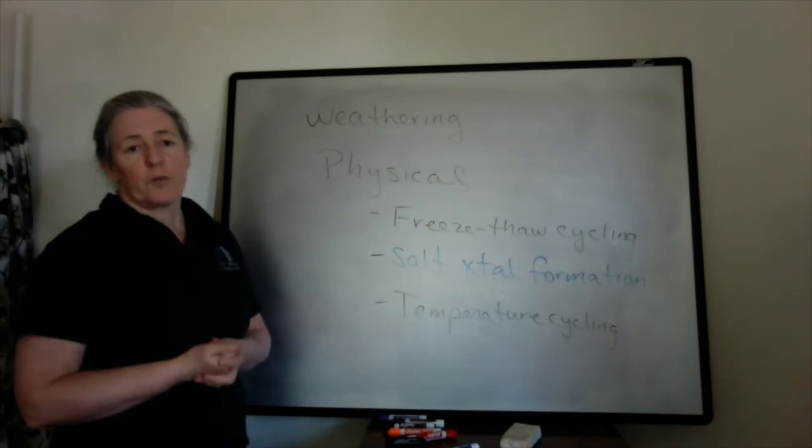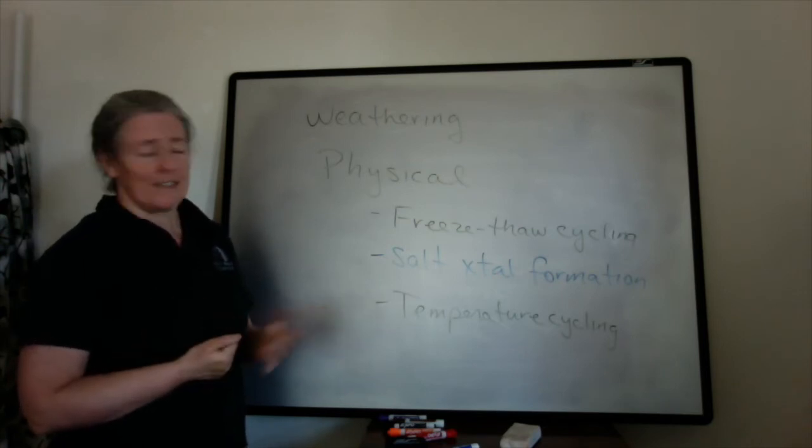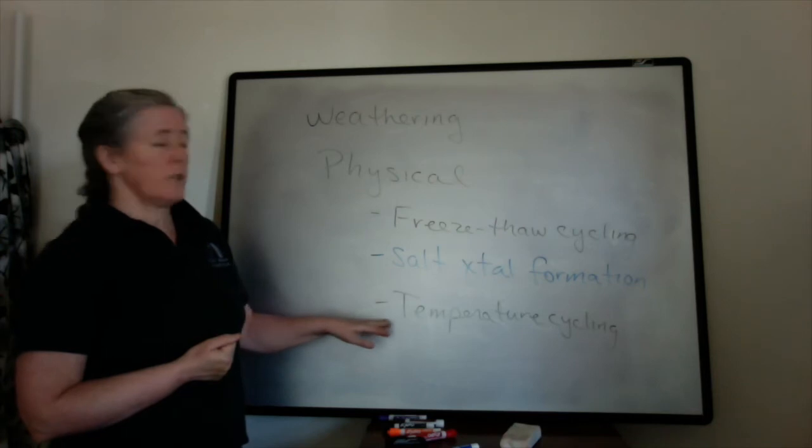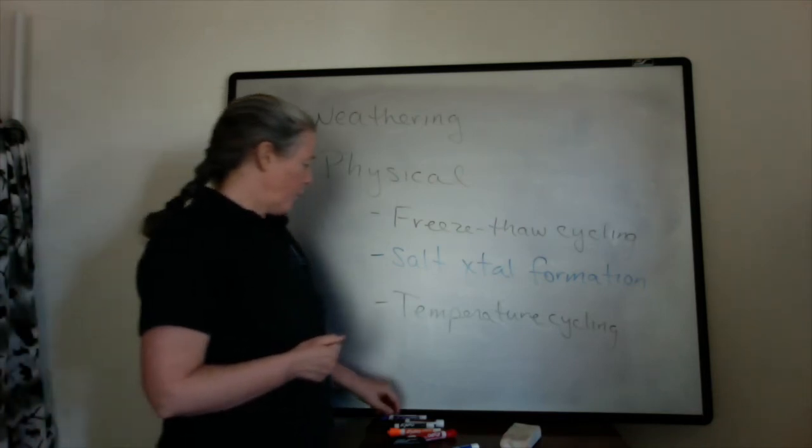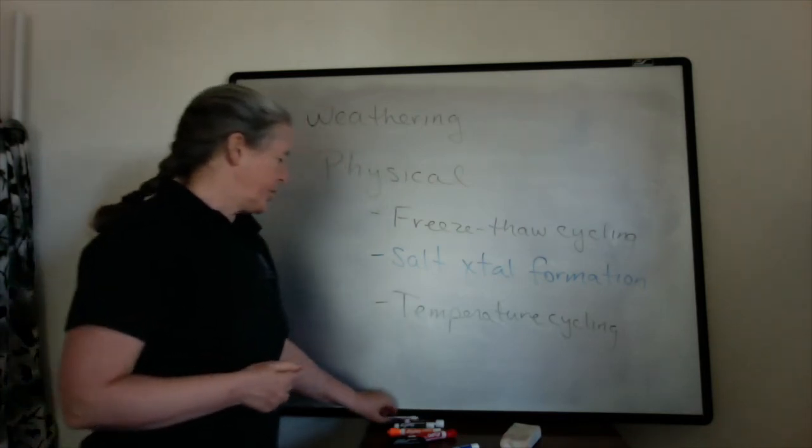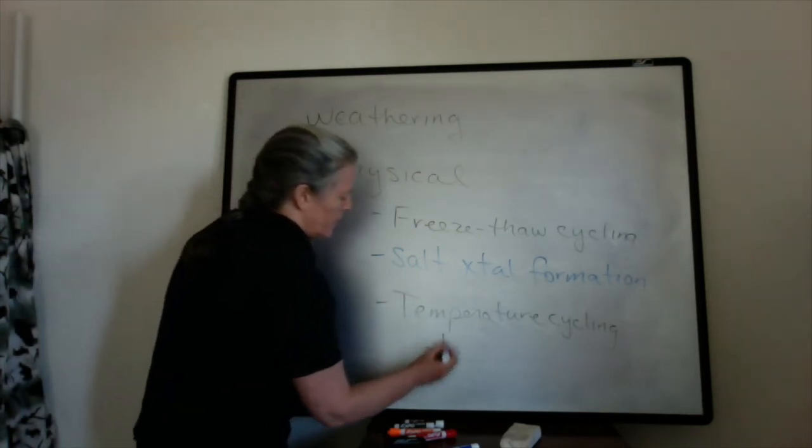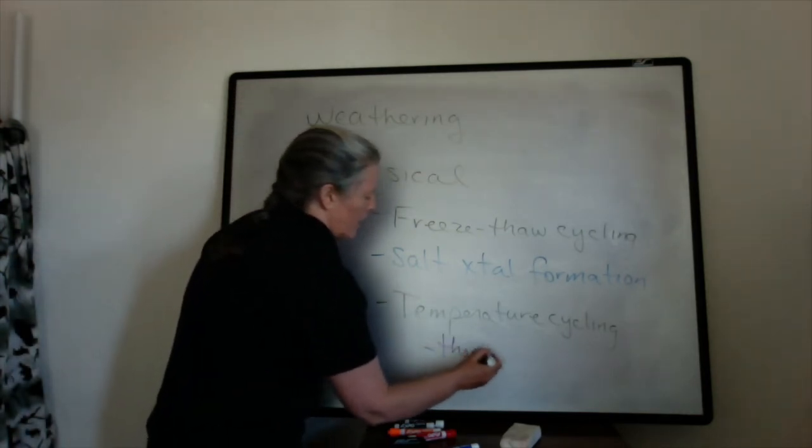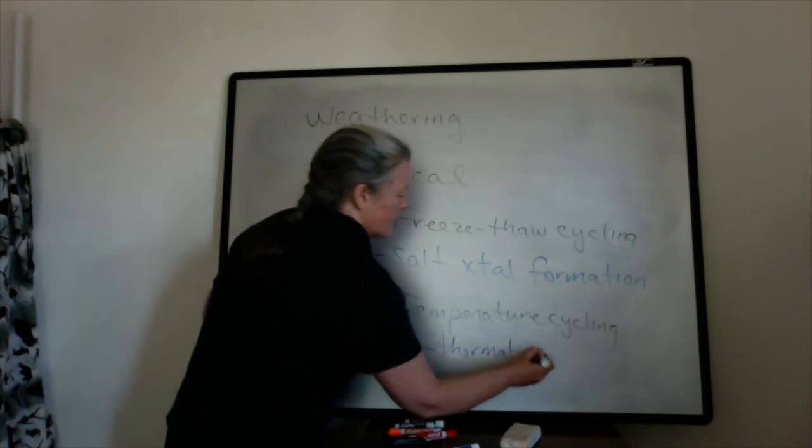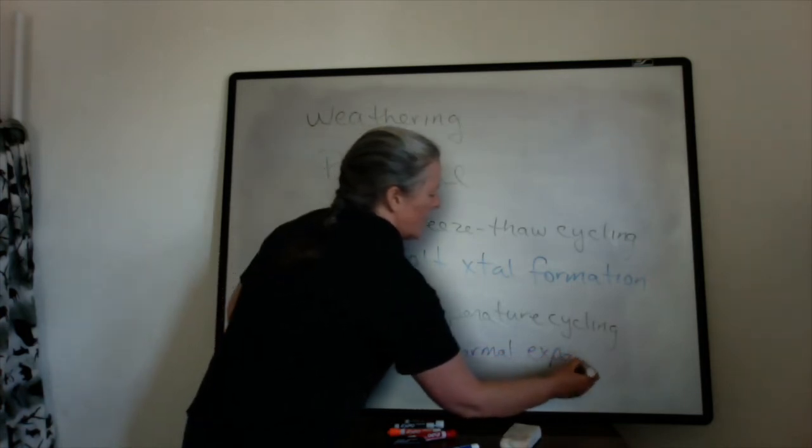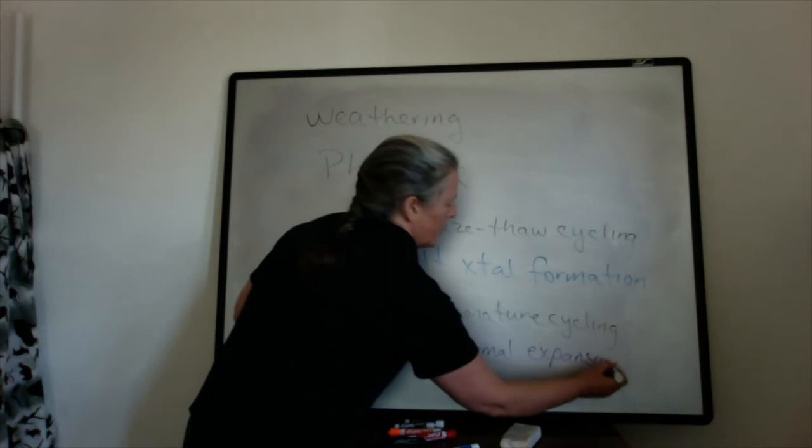So a dark grain will absorb more heat than white grain when it's sitting in the sun. And so it will end up getting hotter. So we have these temperature changes that are due to the thermal expansion of minerals and grains.